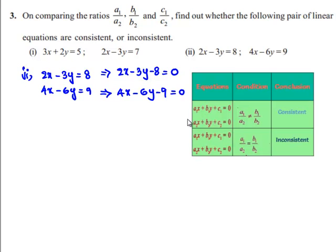By comparing the given set of equations with the standard form a1x plus b1y plus c1 equals 0 and a2x plus b2y plus c2 equals 0,